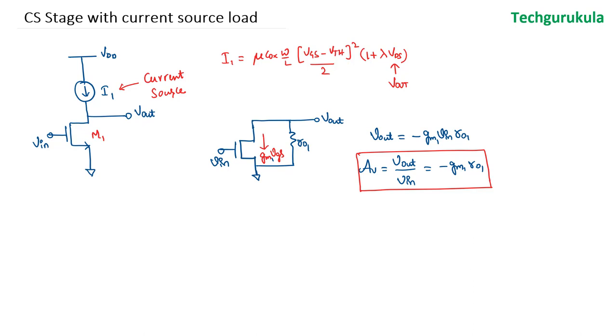So when we use a constant current source as load, the voltage gain is really whatever the MOSFET can actually offer. That's the maximum voltage gain that you can get out of a MOSFET. Any other load that you put is only going to reduce or to the maximum, it will actually bring it to this maximum value that we are seeing here.